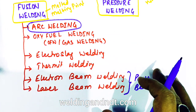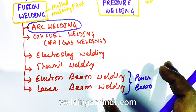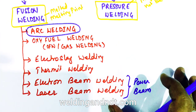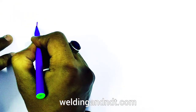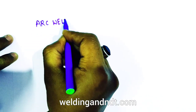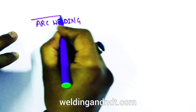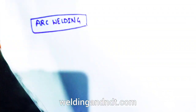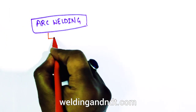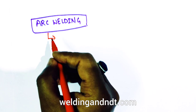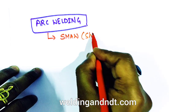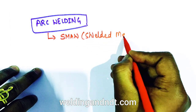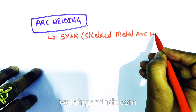Arc welding is further classified. The first and very common arc welding process is shielded metal arc welding, SMAW. The second is GMAW — gas metal arc welding, also known as MIG welding. In GMAW, a shielding gas is used, most commonly an inert gas, which gives the popular name MIG.